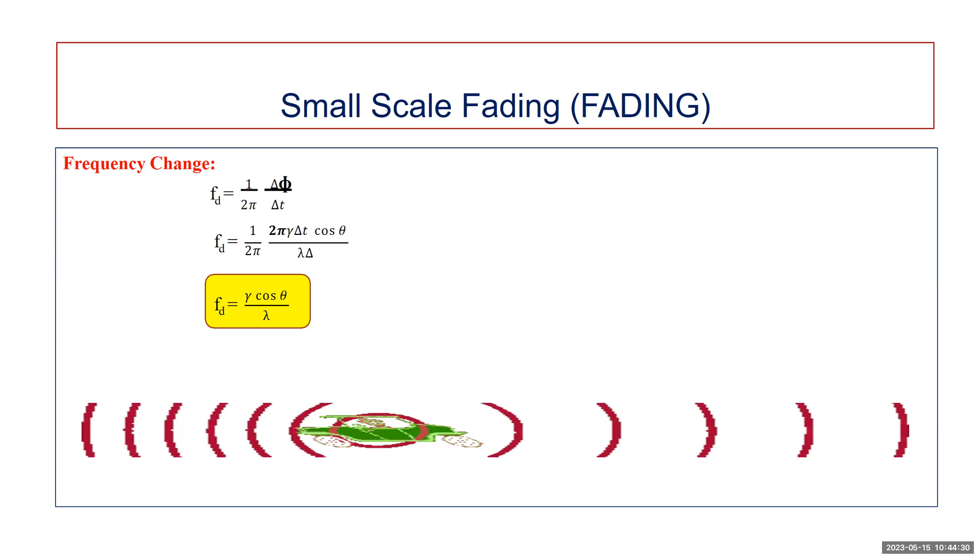This is how we derive the Doppler shift. If the mobile is moving toward the direction of arrival of the wave, the Doppler shift is positive. As shown in the diagram, it will have a smaller difference. If the mobile is moving away from the direction of arrival of the wave, the Doppler shift is negative.